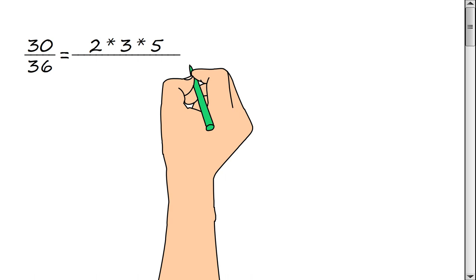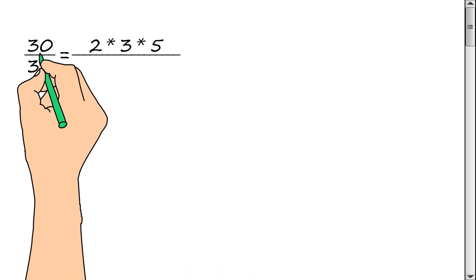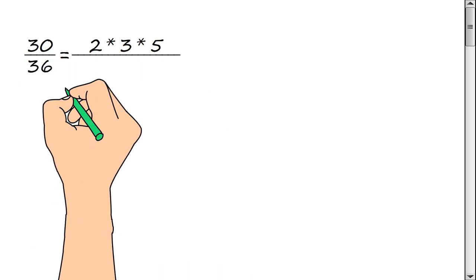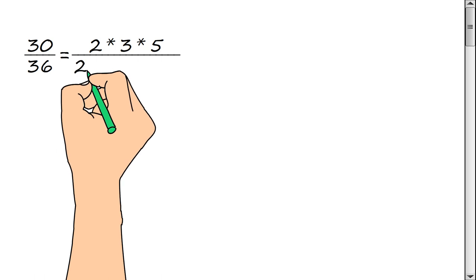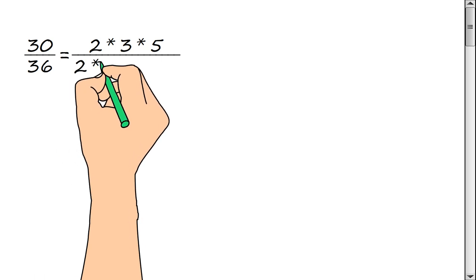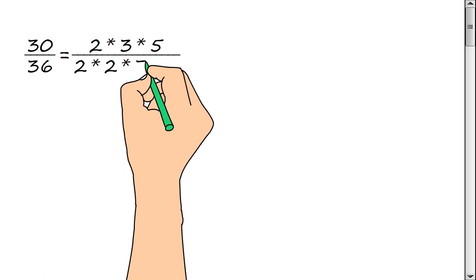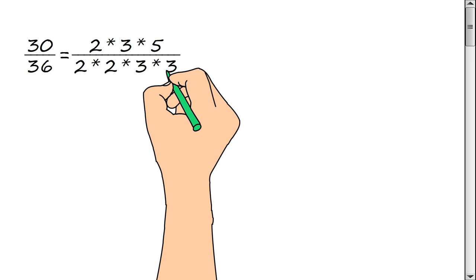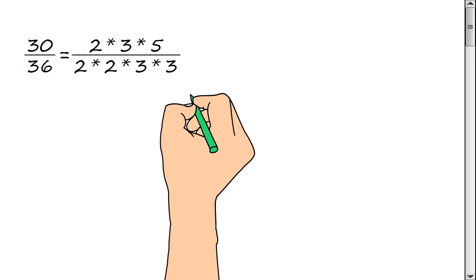Now we represent the denominator of a fraction as a product of prime factors: 2 multiply by 2 multiply by 3 multiply by 3.